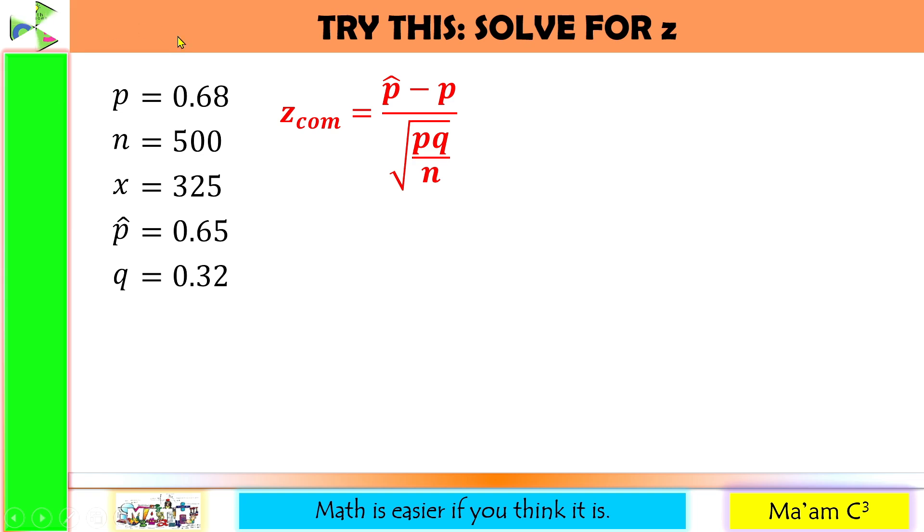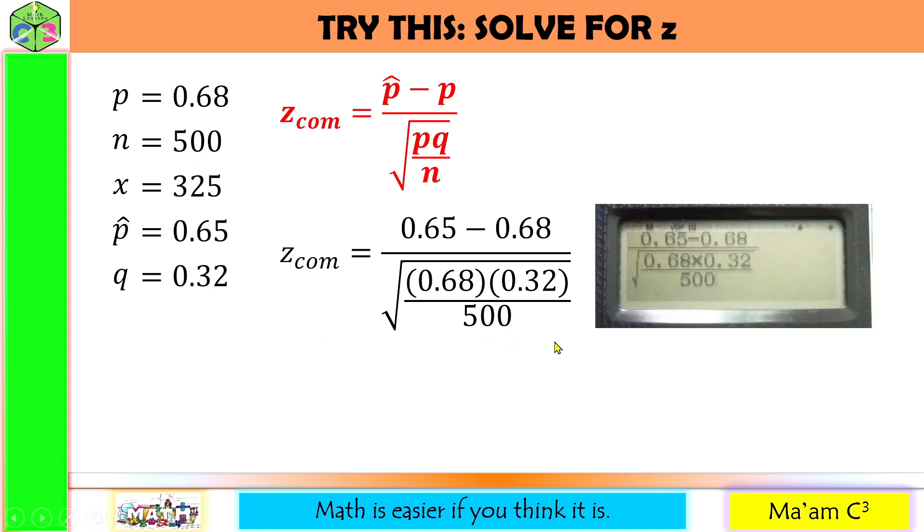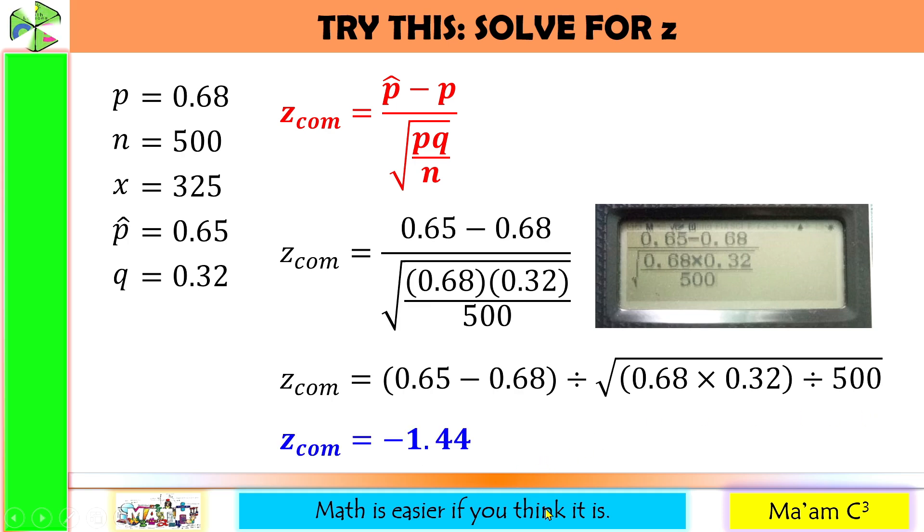Let us try this. Let us substitute our given here in our formula. P hat is equal to 0.65, P is equal to 0.68, P again is 0.68, Q is 0.32, and our N is equal to 500. Encode this in your calculator. Instead of using two pairs of parentheses here, you may also use a multiplication symbol. 0.68 times 0.32 is just the same as this one. And this will give us negative 1.44.